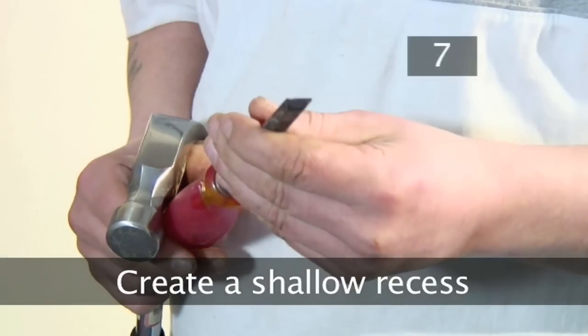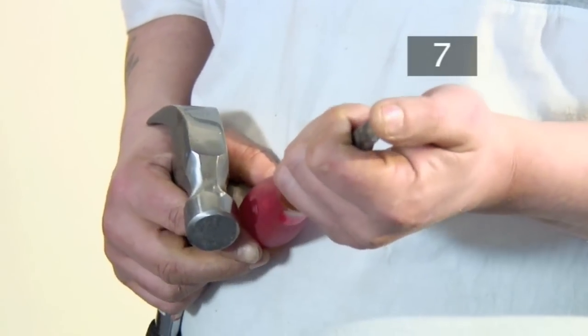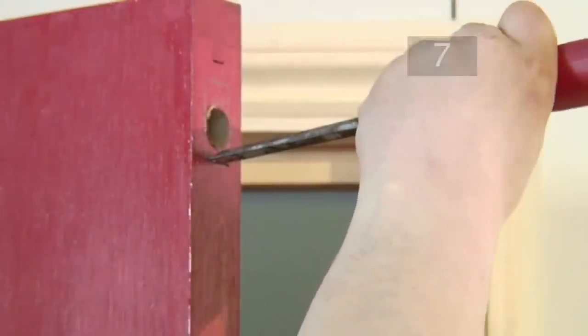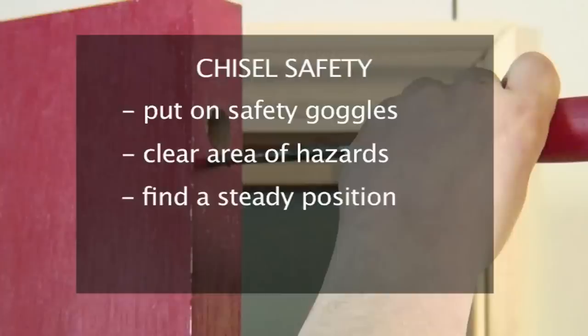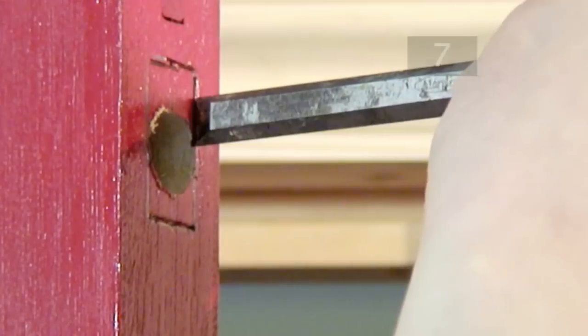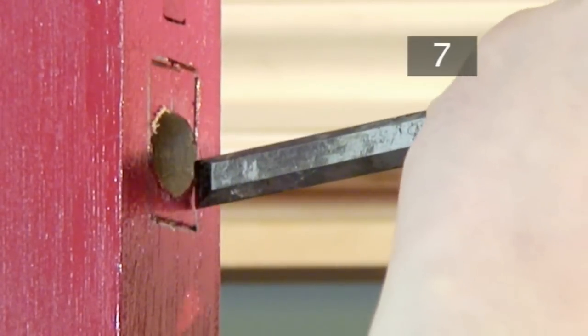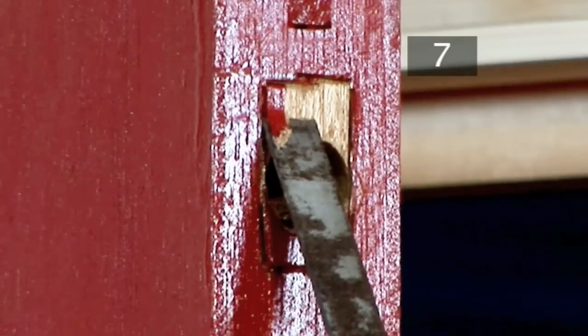Step 7. Create a shallow recess. Before you begin, remember chisel safety. Make sure that you are wearing safety goggles and clear the area of potential hazards. Find a steady position and remember to watch your fingers when you do start chiseling. Make a series of cuts along your pencil outline, then chip out the recess. The faceplate should lie flush with the door.